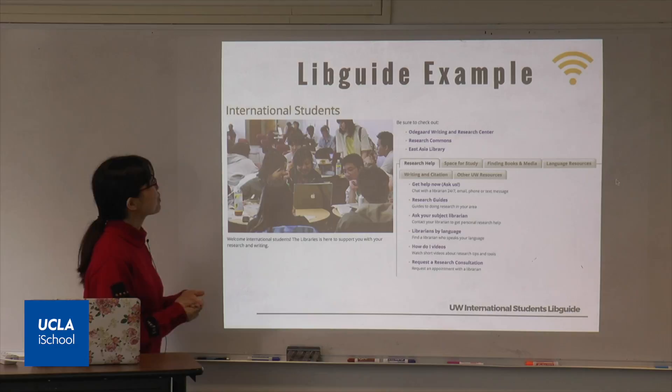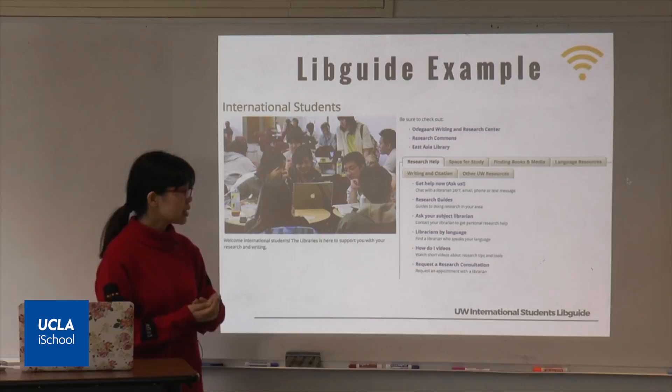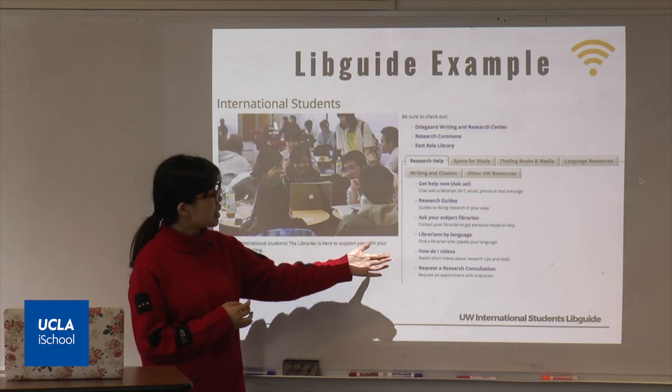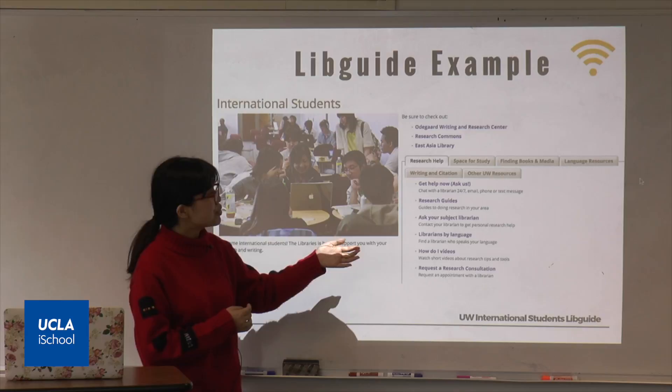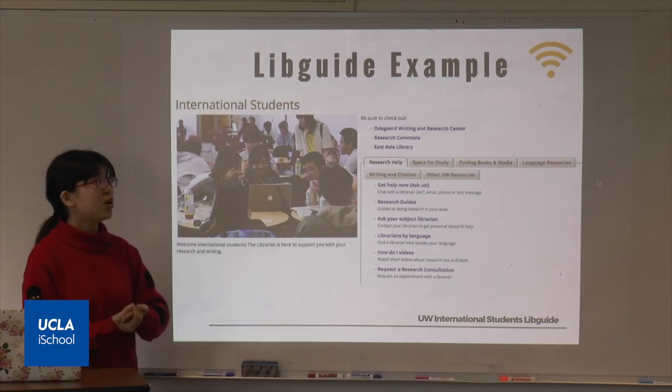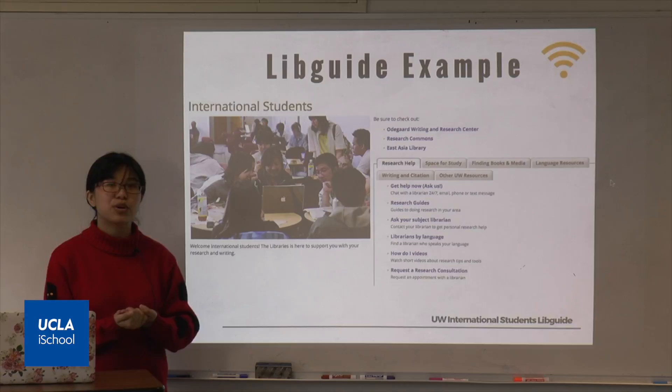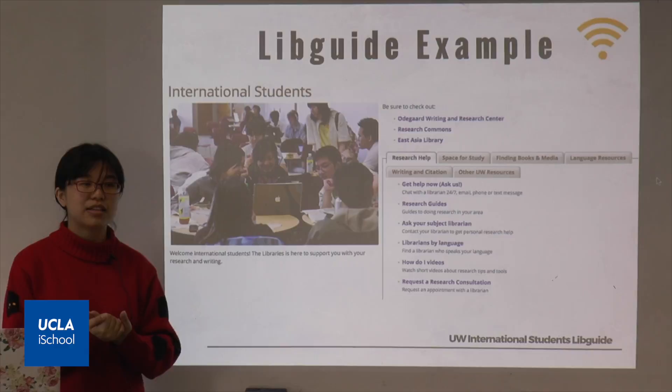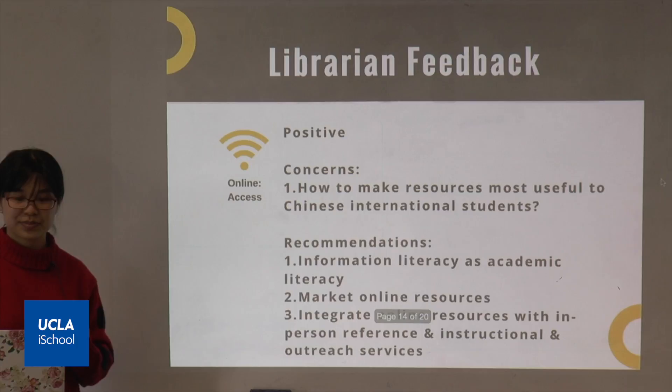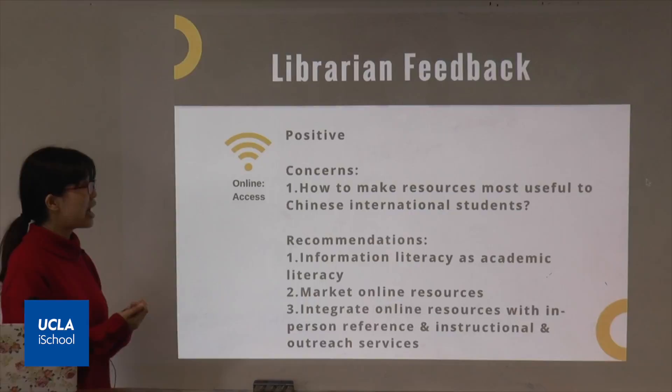Here are some examples of what I found online about these recommendations. This is an example of a LibGuide from the University of Washington — their international student LibGuide. You can see they already have basic information about where to look for help, writing and citation help, and other resources available at the library. Although it's still very simple, I think it's a good start to at least express a welcoming note to international students: we are here to help you, don't be shy, you're very welcome, and it's very natural to ask questions.